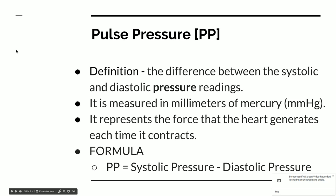Pulse pressure, represented by PP, is the difference between the systolic and the diastolic pressure readings. Those two values are part of the blood pressure, which we'll talk about in a minute. All you have to do is subtract them. It's measured in millimeters of mercury, mmHg, and it represents the force the heart generates each time it contracts. So pulse pressure equals systolic pressure minus diastolic pressure.